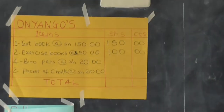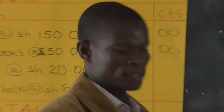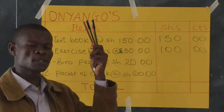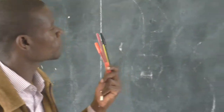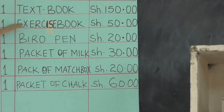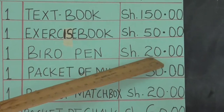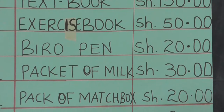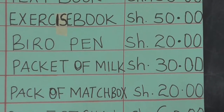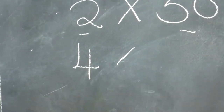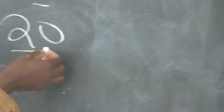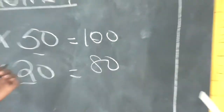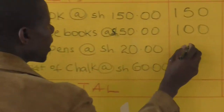The third item bought were four pens. To pay for these four pens I check the price list — one pen costs 20 shillings. I take four pens multiplied by the price of each pen, that is 20 shillings. When I multiply 4 by 20 I get 80. Therefore for the four pens bought I am going to pay 80 shillings.